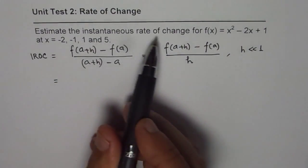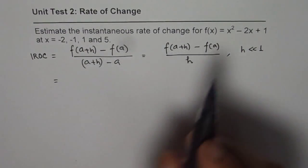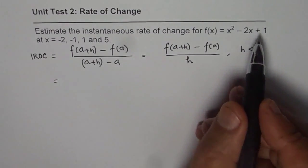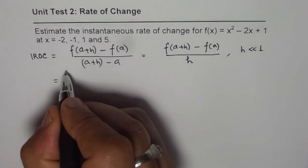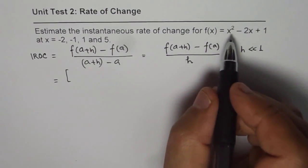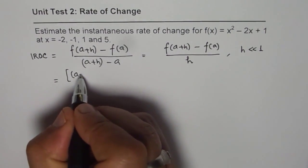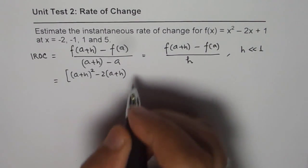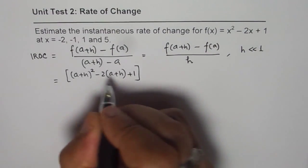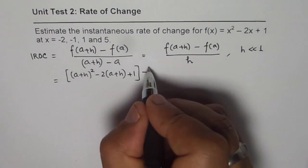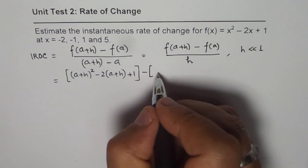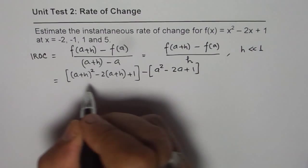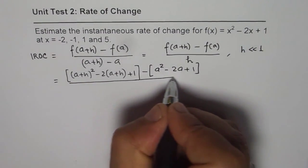We have f(x) = x² - 2x + 1. Let's write a plus h here, so we get the first term as (a+h)² minus 2 times (a+h) plus 1. This is f(a+h). Take away f(a), which is a² minus 2a plus 1, divided by h.